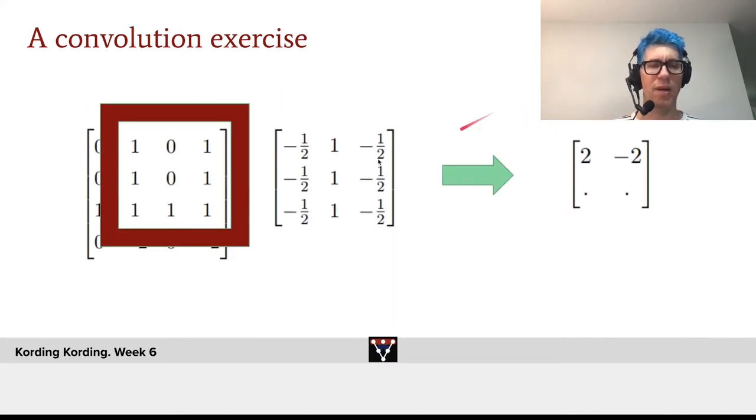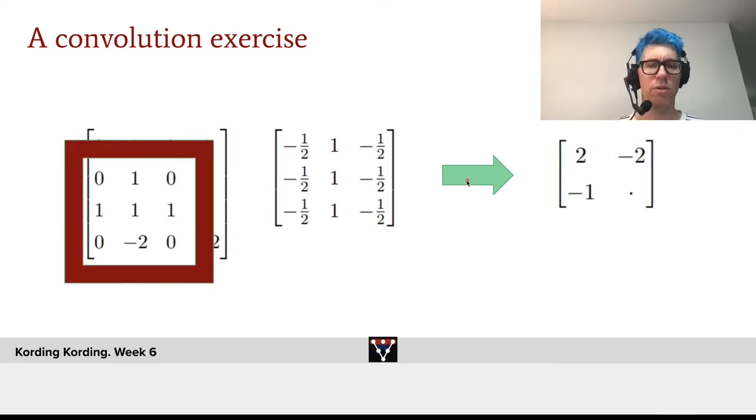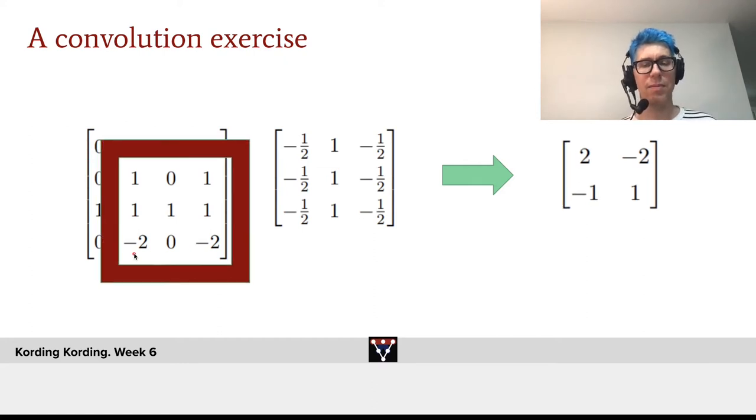And then we can apply it on the right hand side. What's different here is we have only one one and we have six minus one halves, so we get minus three plus one, so we now get a minus two. We can do that same operation here, giving us a minus one, and that same operation in the lower right, giving us a plus one. This is convolution done by hand.